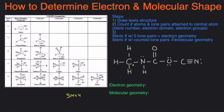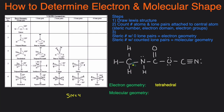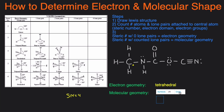Once we have the steric number, to determine the electron geometry we look at what it is with zero lone pairs. To determine the molecular geometry, we look at the actual number of lone pairs around it. We move to our VSEPR table and look at steric number 4. With zero lone pairs, that gives us tetrahedral for the electron geometry. Since this carbon actually had zero lone pairs, the molecular geometry is also tetrahedral. When the central atom has no lone pairs, the electron geometry and molecular geometry will be the same.